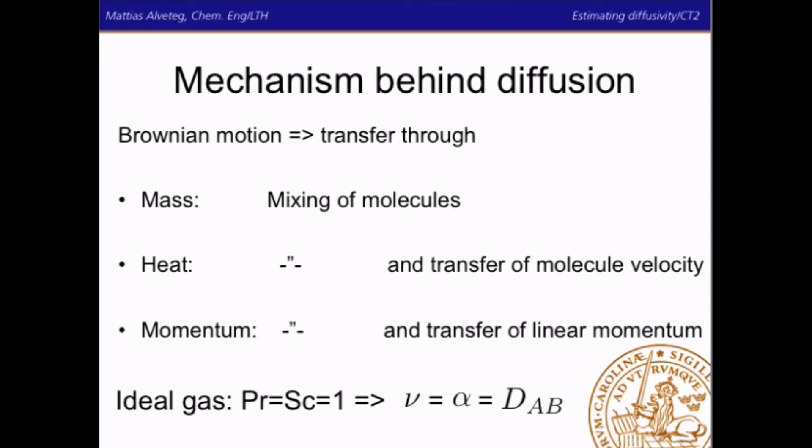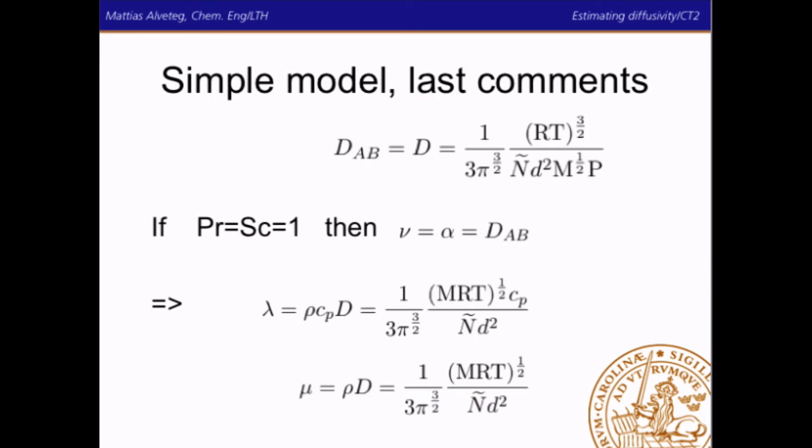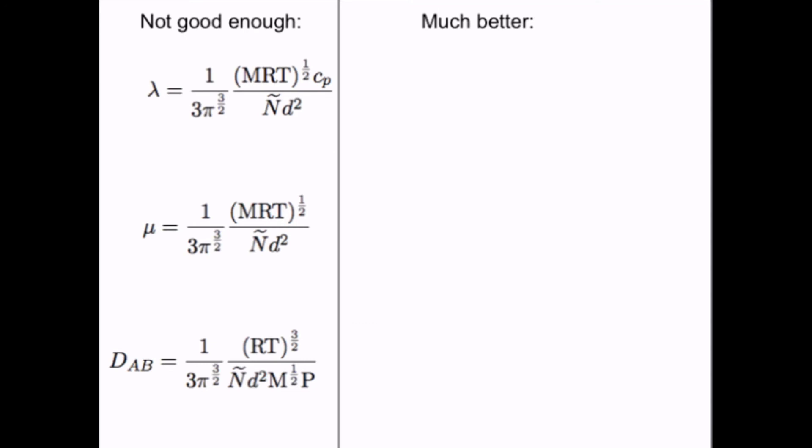For an ideal gas, Prandtl equals Schmidt equals one. Which means that the numerical values of the kinematic viscosity, the thermal diffusivity, and the mass diffusivity are the same. One last comment about the simple model is that if we have Prandtl equals Schmidt equals one, then we can use the definition of Prandtl and Schmidt and calculate the thermal conductivity and the dynamic viscosity.